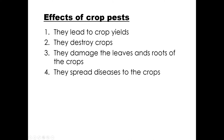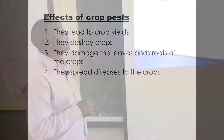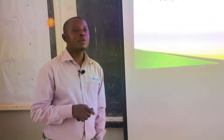And lastly, pests spread diseases to the crops. Remember what I told you at the beginning — crop pests can spread disease germs to crops. So those are the effects: one, they lead to low crop yield; two, they destroy the crops; three, they damage the leaves and roots of crops; and finally, they spread disease to the crops.